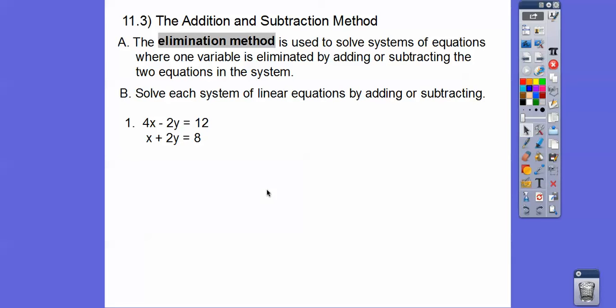So here we can add these equations together because can you see that these variables are going to cancel out the negative 2y and positive 2y? If I just add the top equation to the bottom equation, 4x plus x is going to give us 5x, and then the negative 2y and positive 2y, they cancel each other out. And then 12 plus 8 equals 20. Now we can divide both sides by 5. We get x equals 4.